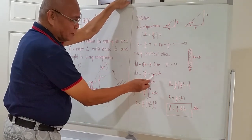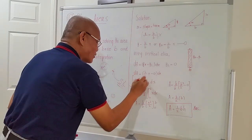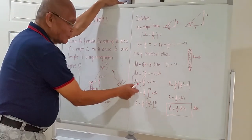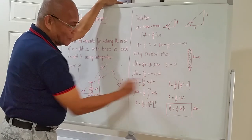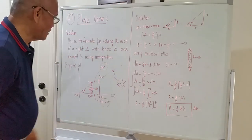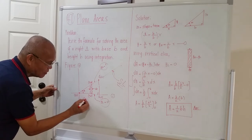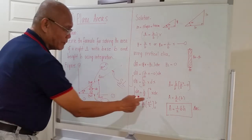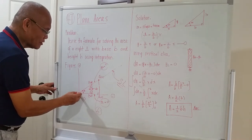Therefore the differential area is (h/b)·x dx. To integrate: the integral of the differential area is just the area. h and b are constants so they come out: area equals (h/b) times the integral of x dx. The limits cover the total area of the right triangle — x goes from 0 to b, so the lower limit is 0 and the upper limit is b.